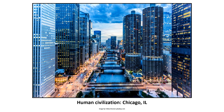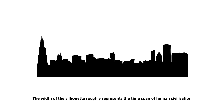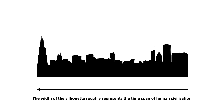We're not using a photograph in this case. What I want to use instead is a representation, a graphic, because I'm not representing a place. What I want to represent instead is a span of time. We're still talking about human civilization, but our silhouette is going to represent the time span of human civilization.